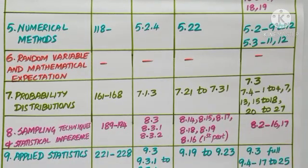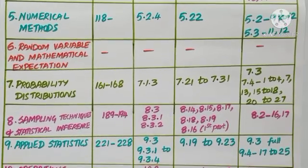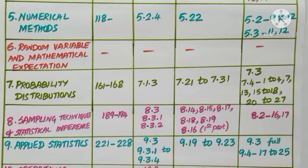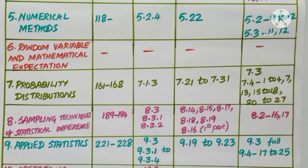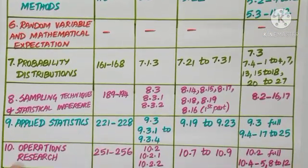Chapter 9: Applied Statistics. Pages 221 to 228 — problems based on statistical quality control (SQC) are deleted. Sections 9.2 and 9.3 (that is, 9.3.1 to 9.3.4) are deleted. Related examples 9.19 to 9.23 and full Exercise 9.3 are deleted. In Exercise 9.4 (objective type), question numbers 17 to 25, based on SQC, are deleted.